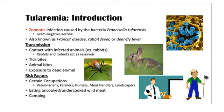Here are some risk factors for this disease. Certain occupations like veterinarians, farmers, hunters, meat handlers, and landscapers are major risk factors for acquiring this disease. The second risk factor is eating uncooked or undercooked wild meat. The third risk factor is camping, which is also a major factor for transmission.